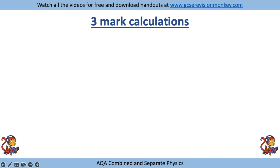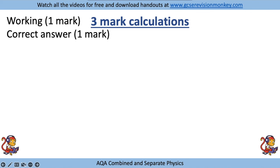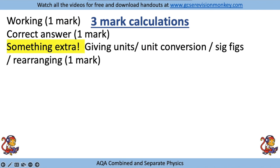If you have a look at a calculation worth three marks, think about it like this: one mark for the working, one mark for the correct answer, and one mark for something extra. That extra mark could be giving the units, converting the units, significant figures, or perhaps rearranging the equation.